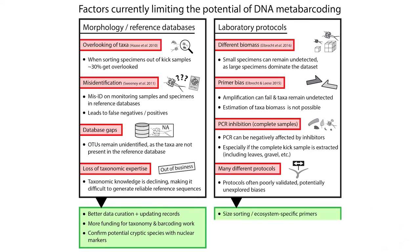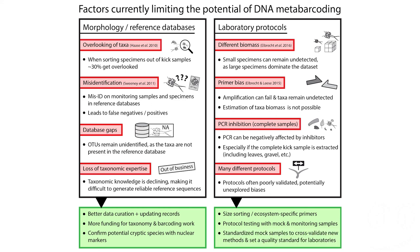Potential solutions include size sorting with a sieve to reduce the influence of large specimens in bulk samples, and using ecosystem-specific primers to reduce primer bias. More protocol testing is needed with diverse communities and real complete kick samples, along with more standardization and cross-validation of methods to set quality standards for laboratories wishing to commercialize DNA metabarcoding for stream quality assessment.